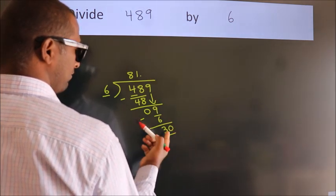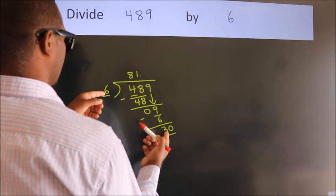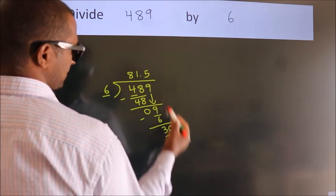30. When do we get 30 in the 6 table? Six fives are 30.